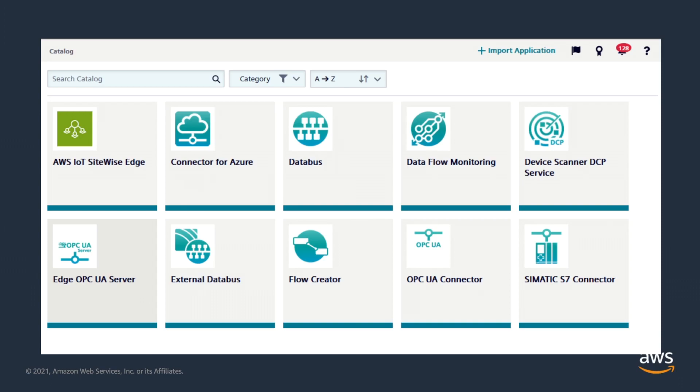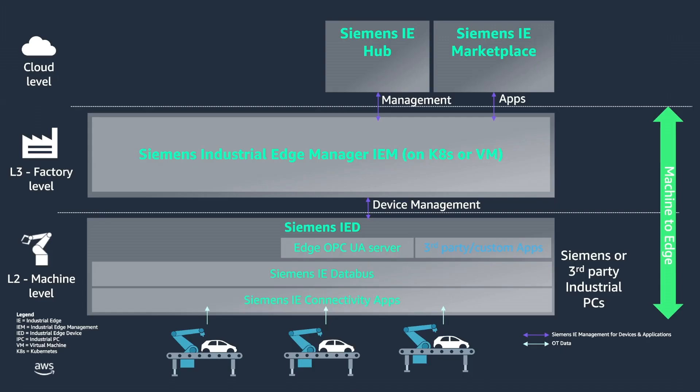Here we can see the breakdown of levels with the L2 machine level, L3 factory level and cloud level. The robot arms are sending data into the Siemens Industrial Edge devices. This data is then available in the Industrial Edge device through Siemens connectivity applications, enabling the machine-to-edge data pipeline.